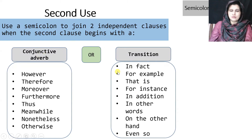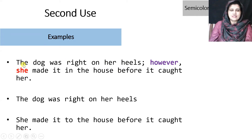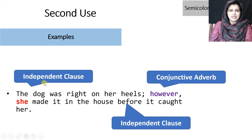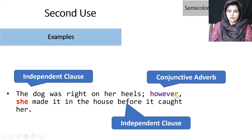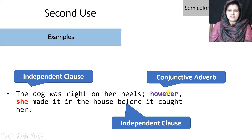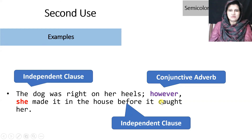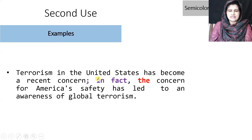Here you can see two sentences joined through a conjunctive adverb. 'The dog was right on her heels' is one independent clause, and 'she made it in the house before it caught her' is another. They are joined through the conjunctive adverb 'however' with a semicolon: after the first sentence we add a semicolon, then the conjunctive adverb, then a comma before the next independent clause.